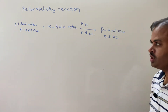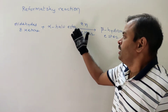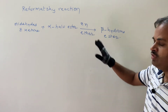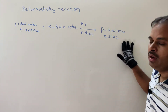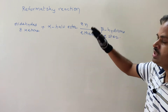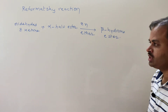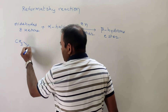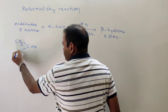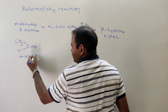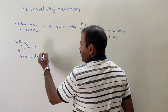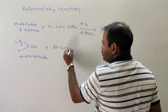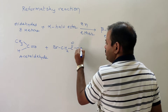What is the Reformatsky reaction? Aldehydes and ketones react with alpha-haloester in the presence of zinc and ether to give beta-hydroxyester. As an example, take acetaldehyde (CH₃CHO) plus the alpha-haloester ethyl alpha-bromoacetate (BrCH₂COOC₂H₅).